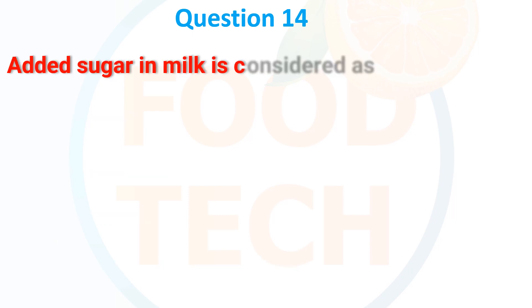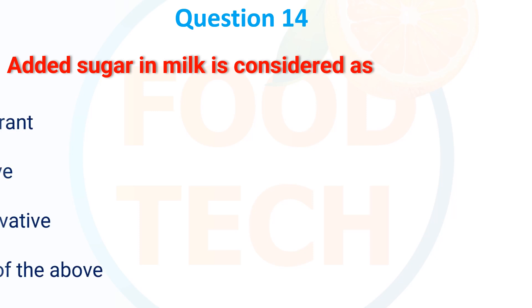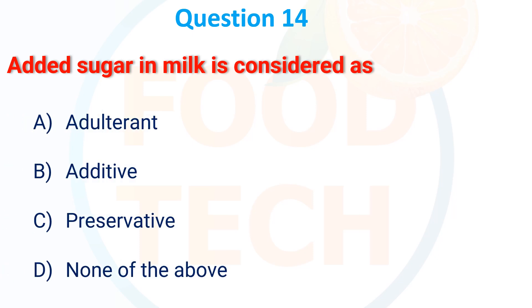Adding sugar in milk is considered as: A. Adulteration, B. Additive, C. Preservative, D. None of the above. The correct answer is adulteration.